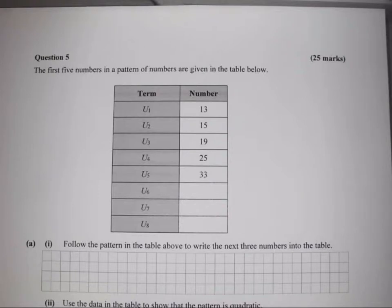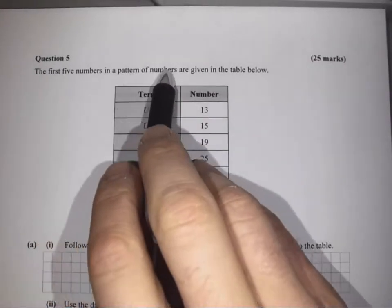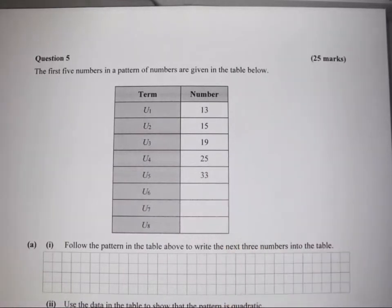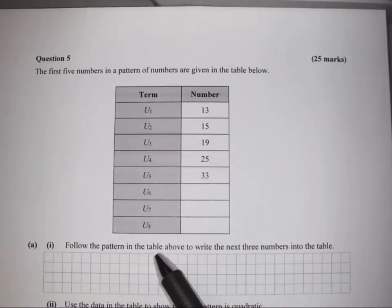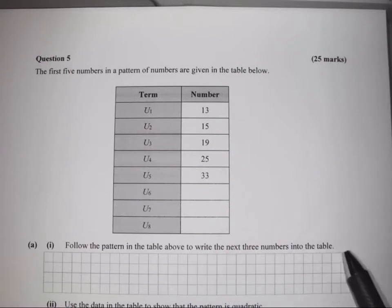This is Leaving Certificate 2016 Question 5 Paper 1 worth 25 marks. The first five numbers in a pattern of numbers are given in a table below. The first question asks: follow the pattern in the table above to write the next three numbers into the table.